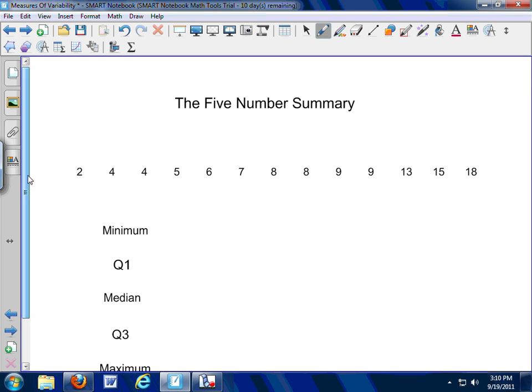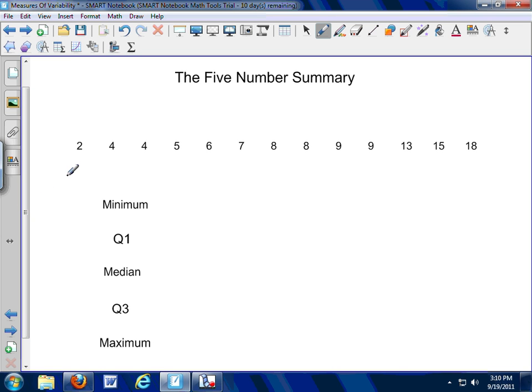One of the major ways that we attack the measures of variability is to look at the five-number summary for a set of data. So, we've got just some random numbers. Pretend they're the number of cats people have, or the number of hot dogs people ate last month, whatever it happens to be. It's just some random numbers that'll help us figure out this five-number summary. The five-number summary, as you might imagine, contains five numbers. Those five numbers are the minimum, Q1, the median, Q3, and the maximum.